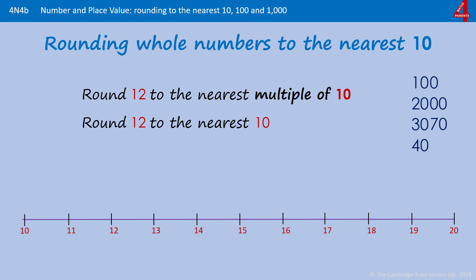The easiest way to look at these at first is to look on a number line. We're going to round 12 to the nearest multiple of 10, and on the line you can see where 12 is in relation to the multiples of 10 either side.